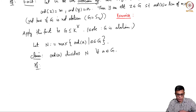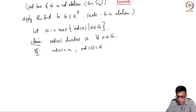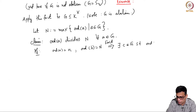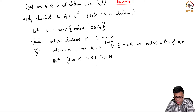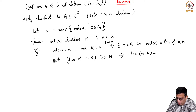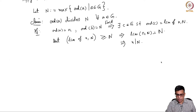The proof of the claim is as follows. Let the order of a be small n and the order of b be capital N — there exists such a b because N is the order of some element. By the fact above, there exists c in G such that the order of c is lcm(n, N). But lcm(n, N) ≥ N because the LCM is a multiple of N. Since N is the maximum order, lcm(n, N) = N, and therefore small n divides N. Hence the claim is proved.